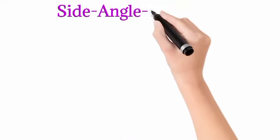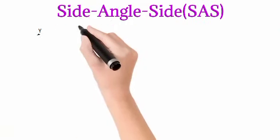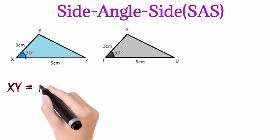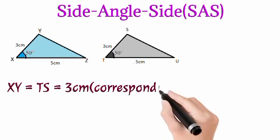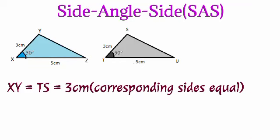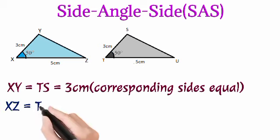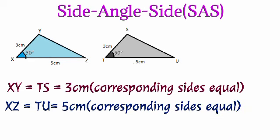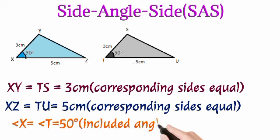Now the second rule is Side-Angle-Side, which we call in short SAS. See, again three things are required to show two triangles congruent. So first triangle is triangle XYZ and other is triangle STU. So first triangle's XY and second triangle's TS, both are equal, both are three centimeters. So these corresponding sides are equal. Now let's see the second side. XZ and the second triangle STU has side TU. Both are five centimeters. It means again the corresponding sides are equal. Now we come to angle. One angle is X and the second triangle's angle T, both are 50 degrees. It means both the angles are equal.